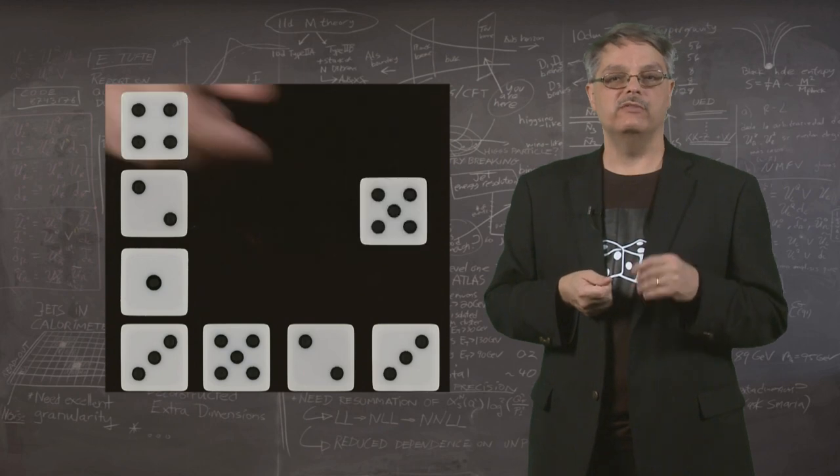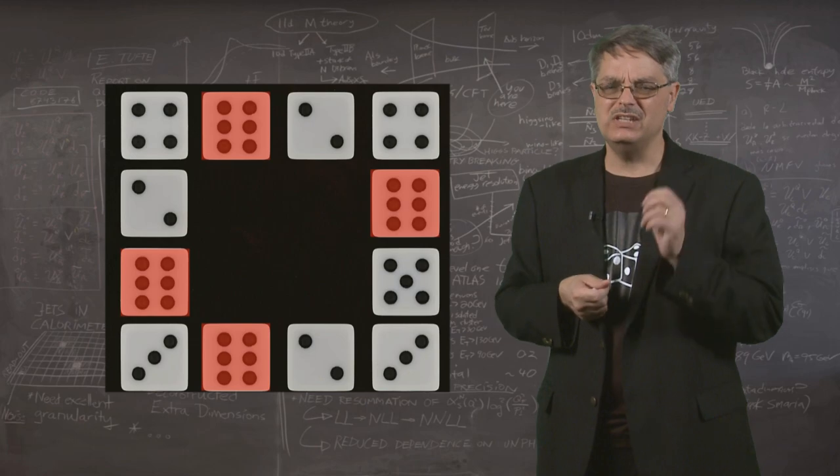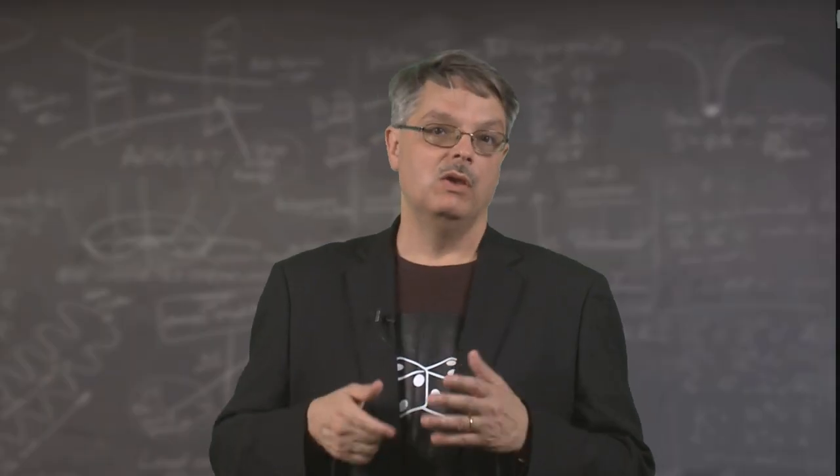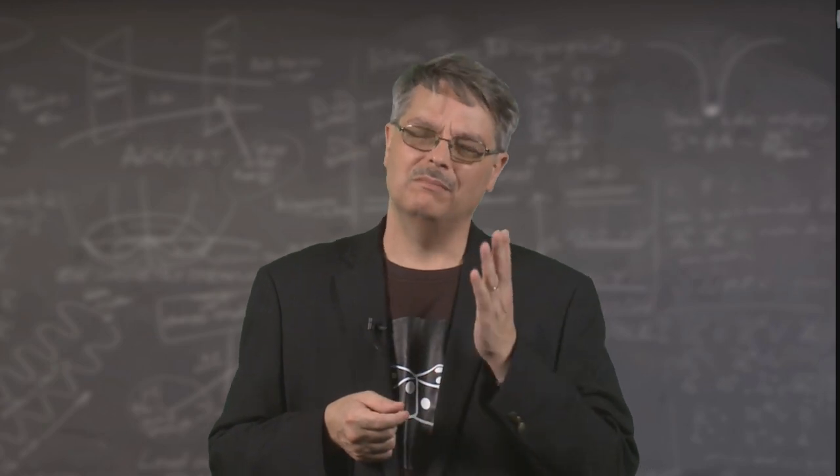You know fully well that if you rolled a die 12 times, you might get zero sixes or maybe four of them. But could you get 12? Well, the short answer is yes. That is a possible outcome. But how likely is it?